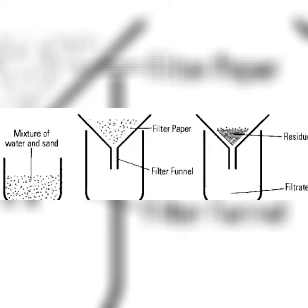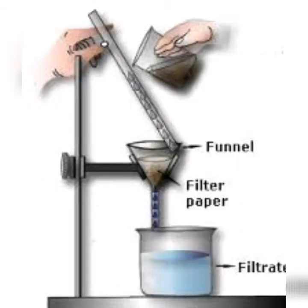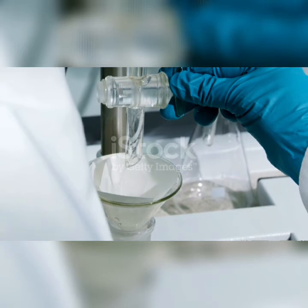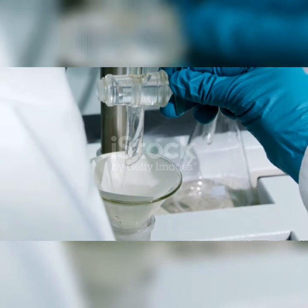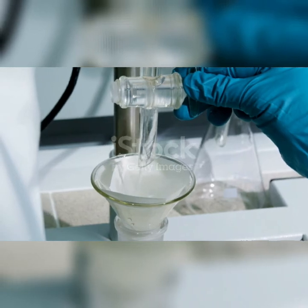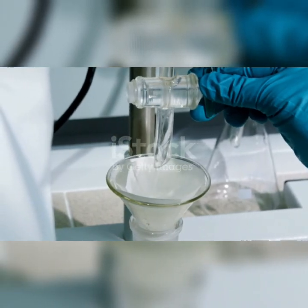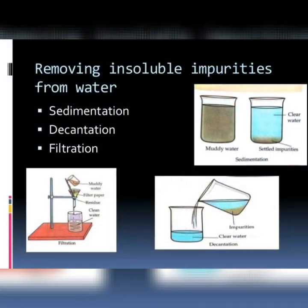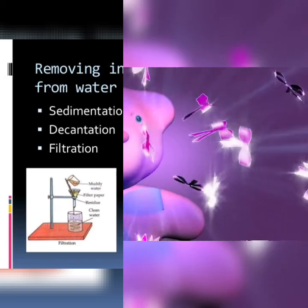The water filter used in homes and offices contains a filter candle with very fine holes in it. It is used to filter out the insoluble impurities. So today we learned about the separation and removal of insoluble impurities from water. In the next class and next video, we will be looking at how to remove the soluble impurities.